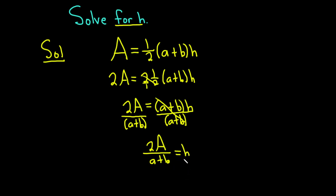But most people don't leave their answers like this. They usually put the variable they're solving for on the left-hand side. So let's rewrite this as h equals 2A over (a + b). And this would be the height of the trapezoid.